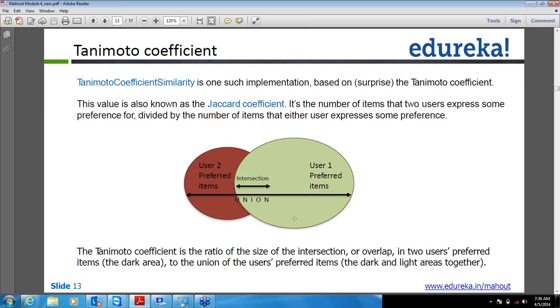So based on the data I will try to come up with a result that which hypothesis is correct. That is a statistical thing. Now how this log likelihood similarity comes into picture?